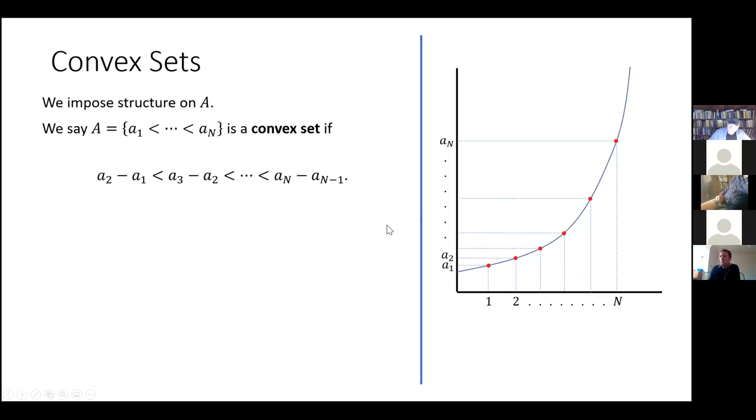Okay. Well, this isn't going to mean that I can rewrite my convex set A to be F of the first N integers where F is a convex function. And when I say a convex function, I mean that it is an increasing function and increasing at an increasing rate.